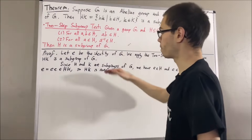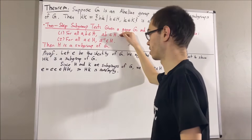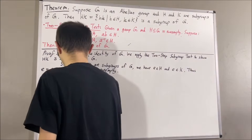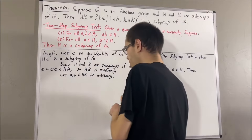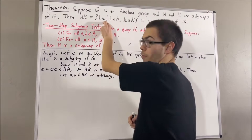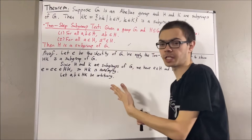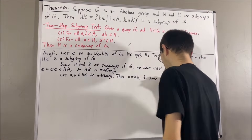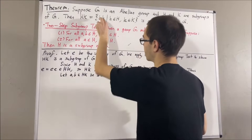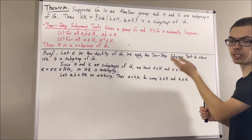So now, let's verify that hk satisfies these two conditions. We're first going to show that hk is closed under the operation of g. To do that, let's consider two arbitrary elements a and b in hk. We want to show that a times b belongs to hk. Since a is an element of hk, we can say that a is equal to h1 k1, where h1 is an element of h and k1 is an element of k. Also, since b is an element of hk, we can say b is equal to h2 k2, where h2 is an element of h and k2 is an element of k.